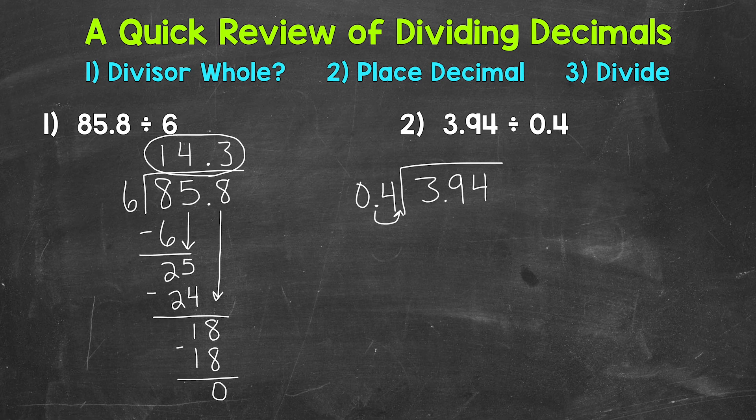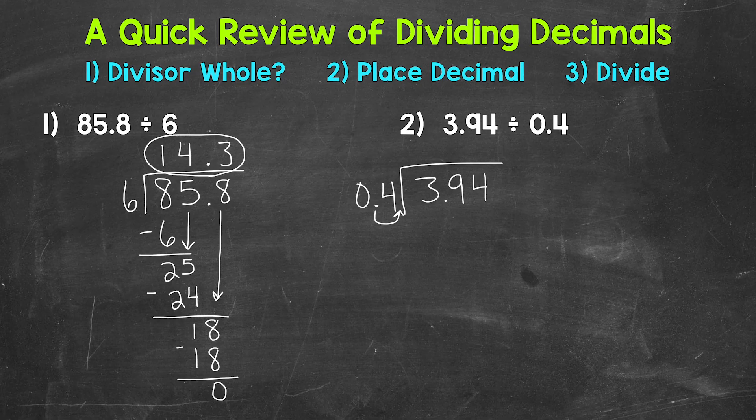Now in order to keep this problem balanced, whatever we do to the outside, the divisor, we must do to the inside, the dividend. Again, this keeps the problem balanced and equivalent. Let's move the decimal once on the inside as well, so multiplying the dividend by 10 also.